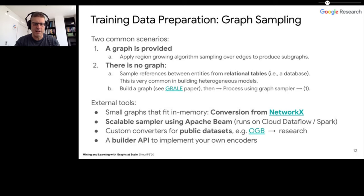Or we could build a graph using the same technology that Jonathan Halcro described earlier today in his presentation, the GRAIL tool. Basically, this involves defining a similarity function over the set of entities, and then running this tool that uses sketching and locality sensitive hashing to produce a graph on very large datasets. Then we can run the regular sampler on top of these.